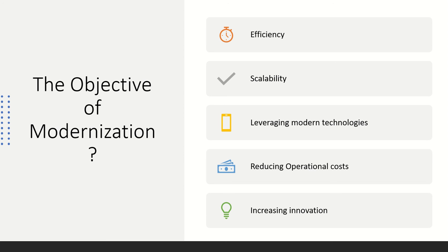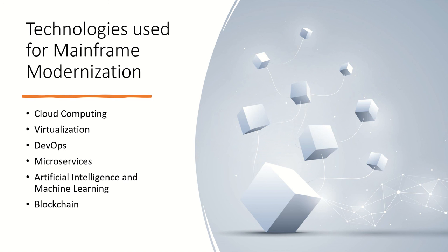Mainframe modernization is a critical process for organizations that rely mainly on mainframe systems to support their critical business processes and applications. By leveraging modern technologies, reducing operational costs, and increasing innovation, mainframe modernization can help organizations improve overall efficiency, scalability, and reduce operational costs.